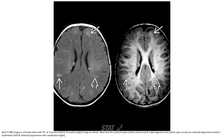T1 MRI images in a female infant with tuberous sclerosis at 3 months on the left and 10 months on the right. Note how the cerebral tubers and radial migration lines are relatively hypointense before myelination on the left, and relatively hyperintense after myelination on the right.